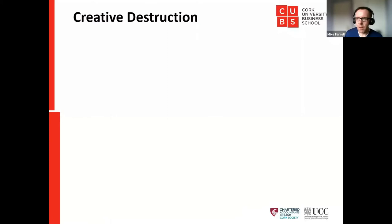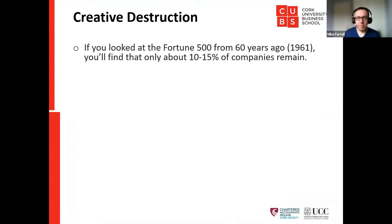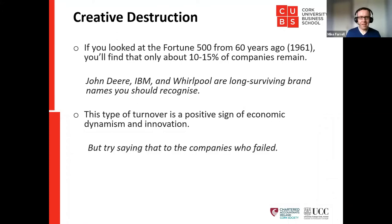If you looked at the Fortune 500 from 60 years ago, only about 10 to 15 percent of those companies remain. Three examples — John Deere, IBM, Whirlpool — are brands people still recognise. From a positive point of view, this turnover could be seen as a sign of economic dynamism and innovation, but try saying that to the companies that actually failed.